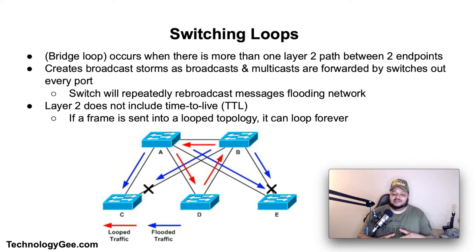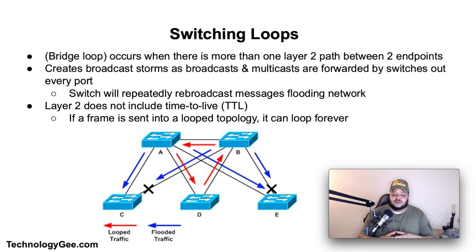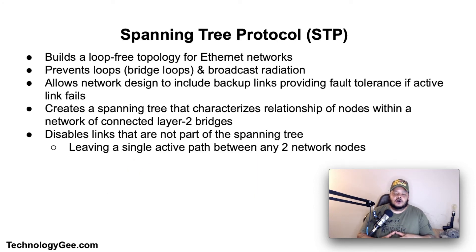A switching loop, or bridge loop, occurs in computer networks when there is more than one layer 2 path between two endpoints — such as multiple connections between two network switches, or two ports on the same switch connected to each other. The loop creates broadcast storms, as broadcast and multicast traffic forwarded by switches out every port will be repeatedly rebroadcast, flooding the network. Since the layer 2 header does not include a time-to-live field, if a frame is sent into a loop topology it can loop forever.